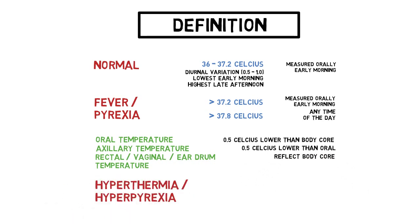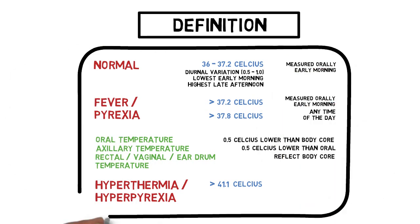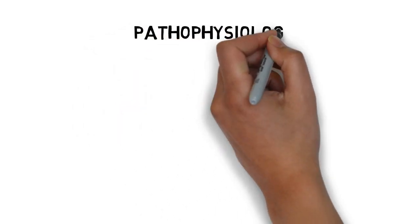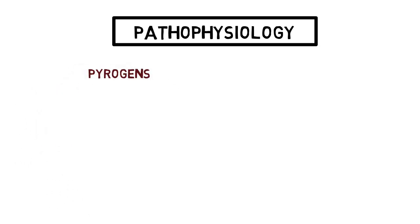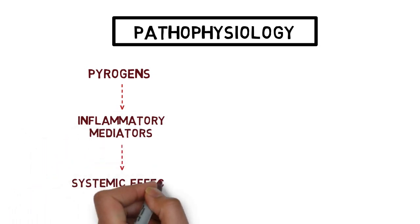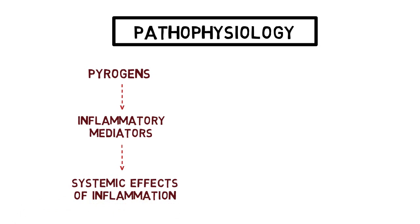Hyperpyrexia is worthy of a different category because, as we will see later, temperature above 41 degrees may point to other differential diagnoses. Next is pathophysiology. We can summarize the development of fever into three stages. We have the stimuli — specifically called the pyrogens — which cause the release of inflammatory mediators that have effects on our body either locally or systemically, and fever is one of those systemic effects.